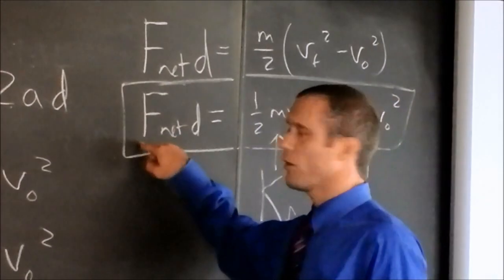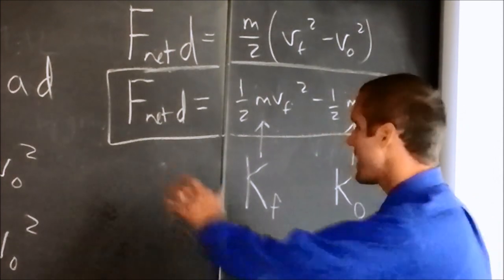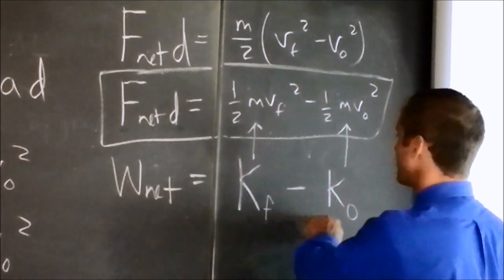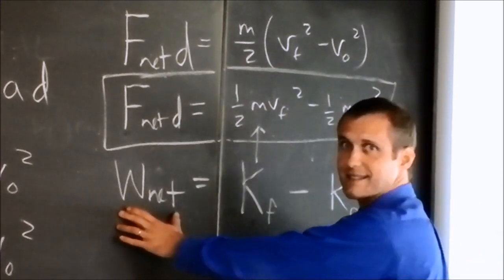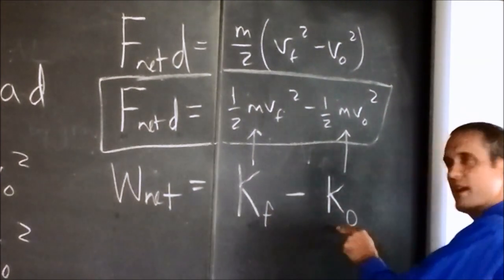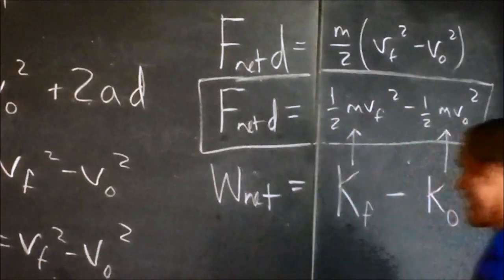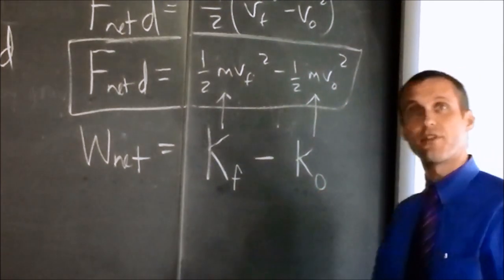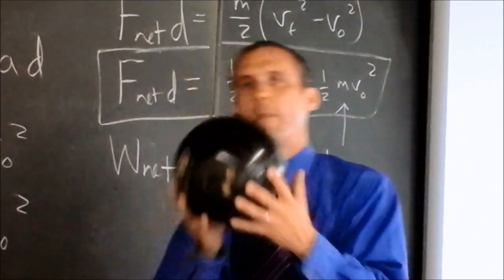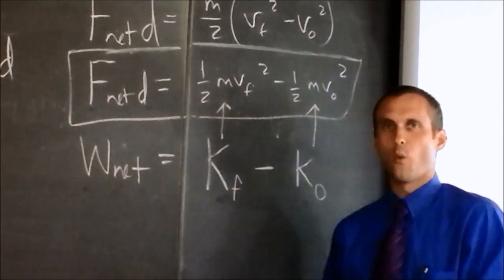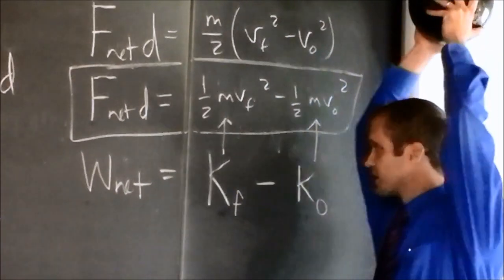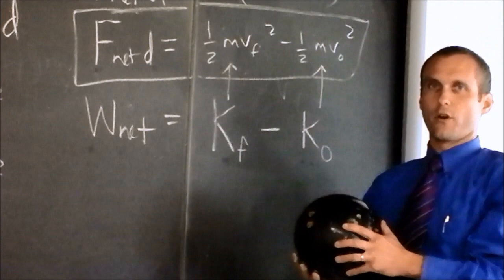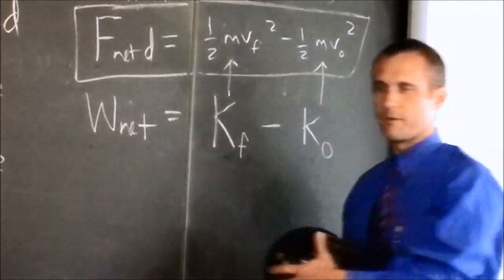So notice that when work done is positive, net work is final kinetic energy minus initial kinetic energy. When net work is positive, that means final kinetic energy is bigger than initial kinetic energy, so the thing is speeding up. And when work net is negative, final kinetic energy must be smaller than initial kinetic energy, so the thing is slowing down. You see the net work of the bowling ball on the way up, the bowling ball is slowing down, so the net work is negative. And as the bowling ball falls, the net work on it is positive because it's speeding up.